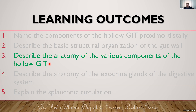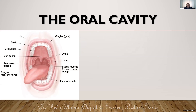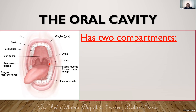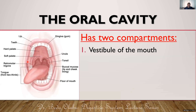Now let's talk about the anatomy of the different parts of the hollow GIT, starting with the oral cavity. The oral cavity is what you call the mouth. Usually the mouth has two compartments. There is the vestibule of the mouth — the region between the teeth and the cheeks or lips. Into this vestibule the parotid duct opens, usually opposite the second maxillary molar tooth.